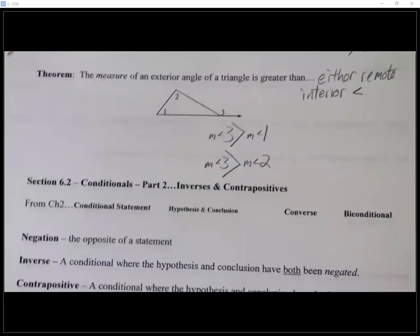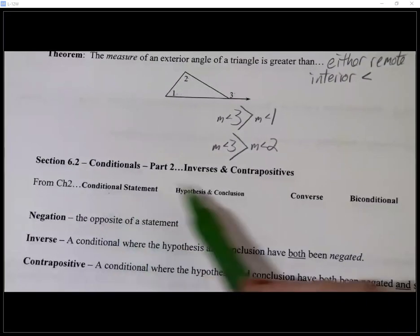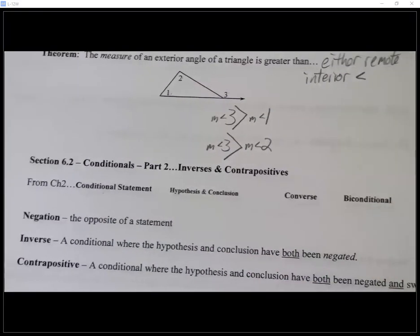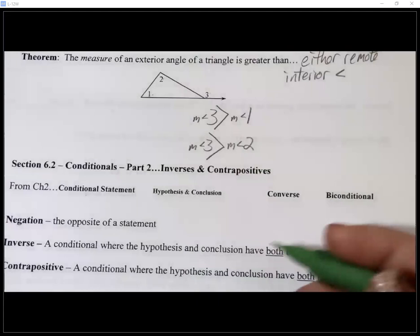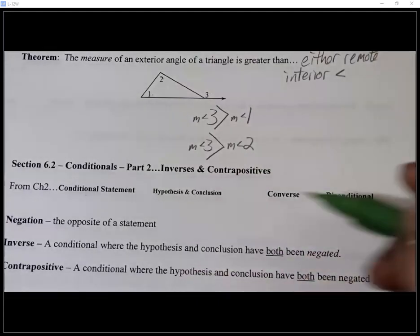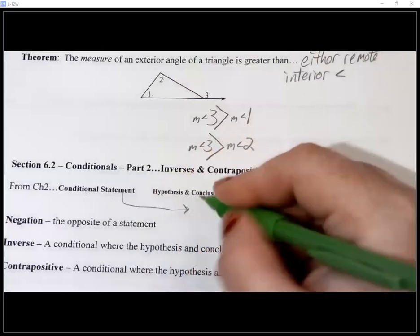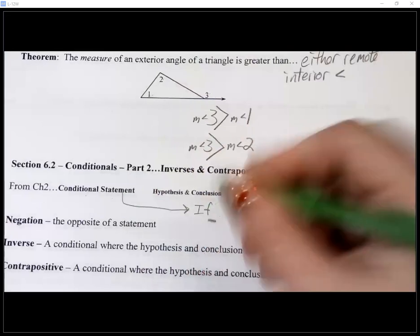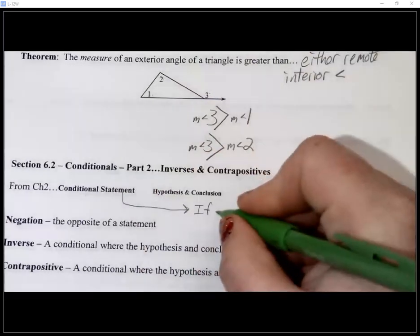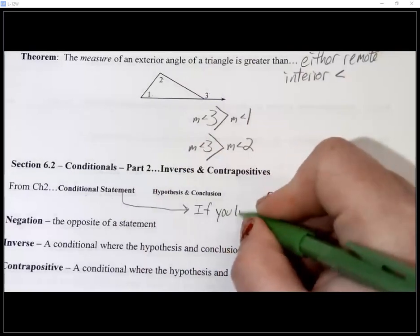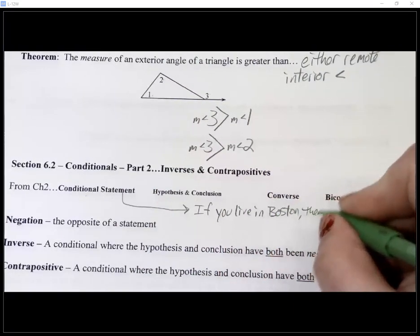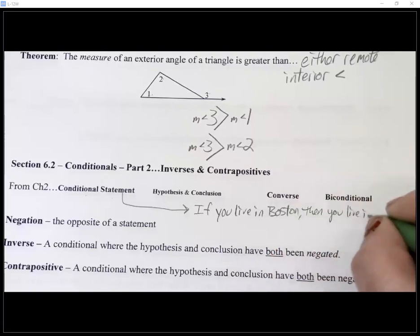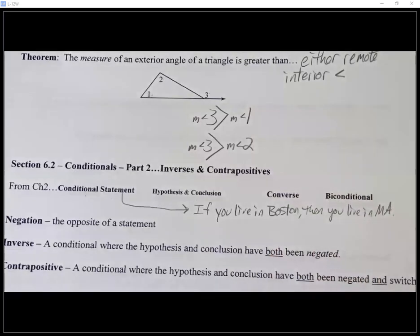Okay, so 6-2. So we've been refreshing our memory on these conditional statements, the hypothesis and conclusion, the converse and the biconditional. So I guess it's worth throwing an example up here real quick. So a conditional, see, this is why I don't always love the printed ones, because I don't have room to do anything. But anyway, so a conditional statement, for example, could be, let's do if, let's do the Boston one. If you live in Boston, then you live in Mass.